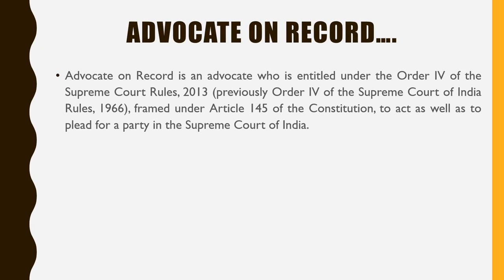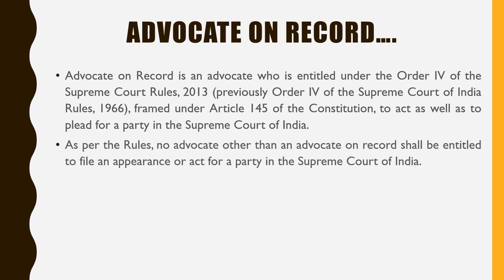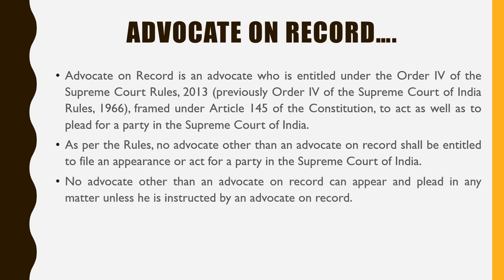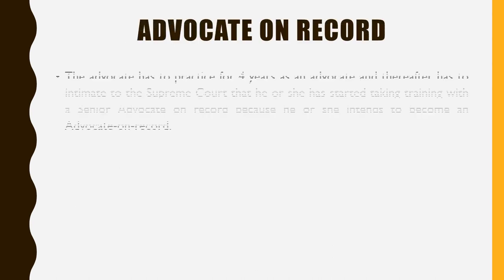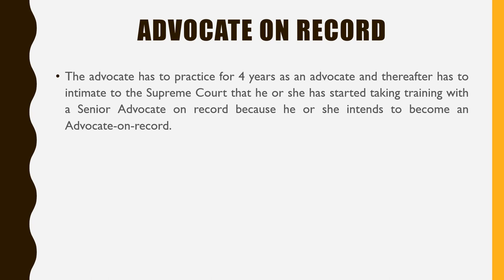Advocate on Record: He is an advocate who is entitled under Order 4 of the Supreme Court Rules 2013, framed under Article 145 of the Constitution, to act as well as to plead for a party in the Supreme Court of India. No advocate other than an advocate on record shall be entitled to file an appearance or act for a party in the Supreme Court. No advocate other than an advocate on record can appear and plead in any matter unless instructed by an advocate on record. If an advocate wants to practice as an advocate on record in the Supreme Court, he or she needs additional qualifications.